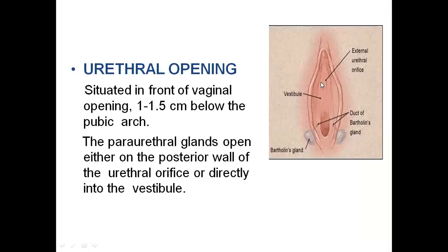Coming to the openings one by one, the major opening we have is the urethra — the urethral opening through which urine comes out, continuing from the urinary bladder in females. It is situated in front of the vaginal opening, 1 to 1.5 cm below the pubic arch. The para-urethral glands open on either side on the posterior wall of the urethral orifice or directly into the vestibule.